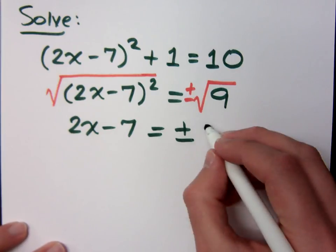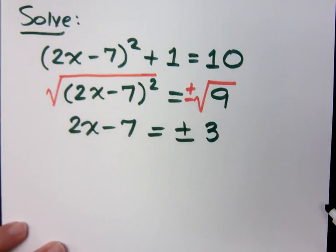Keep going. It equals 3. Then I've got to get... See, now this is where you've got to get the x by itself. 7 plus.